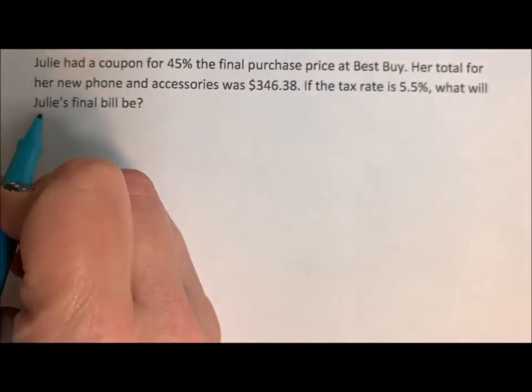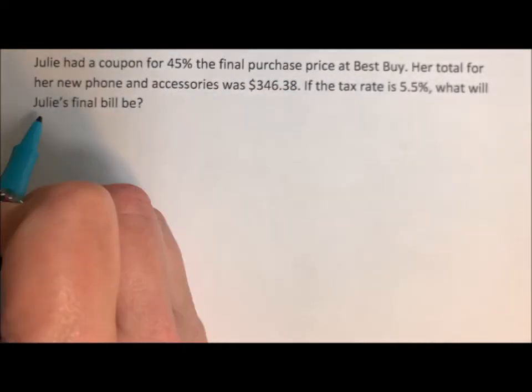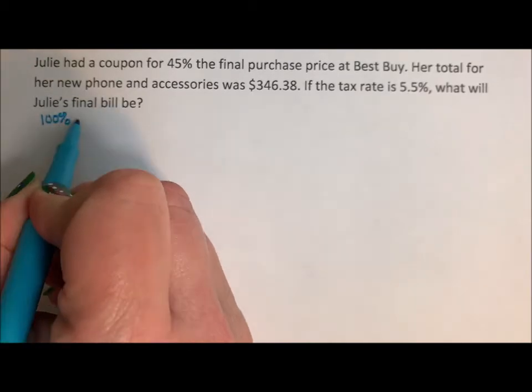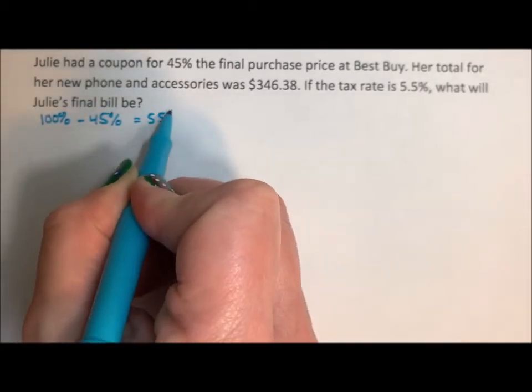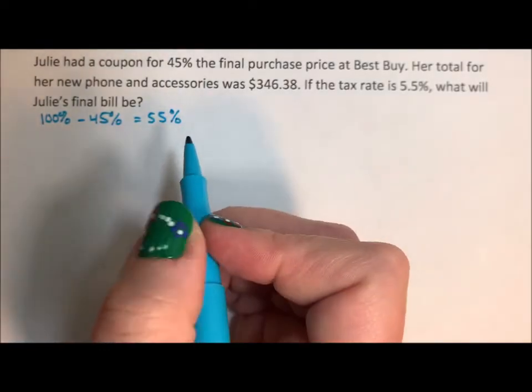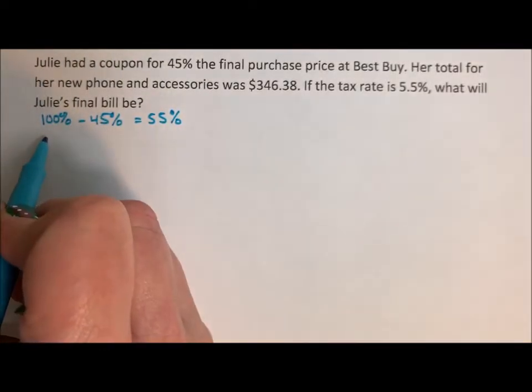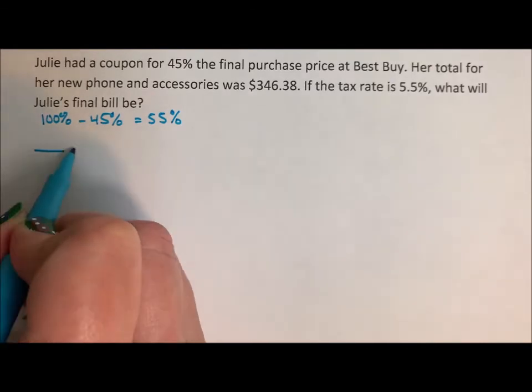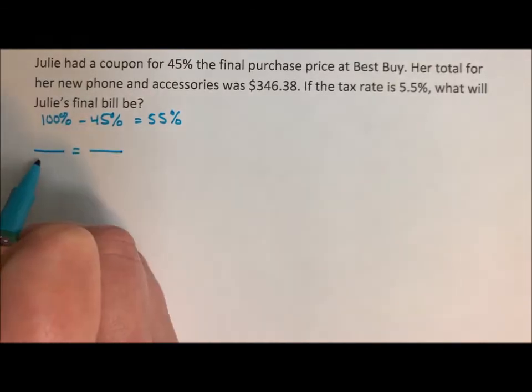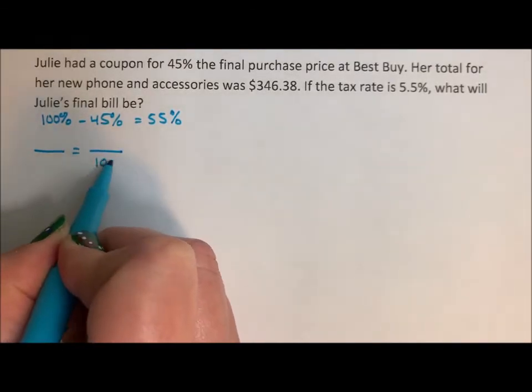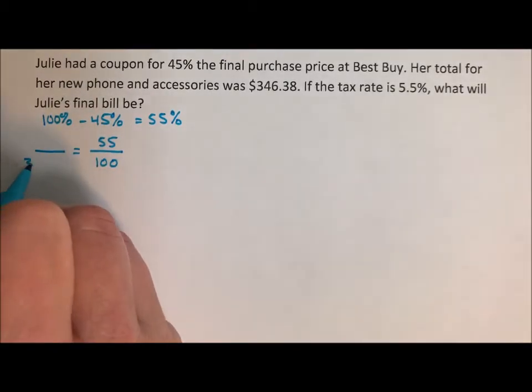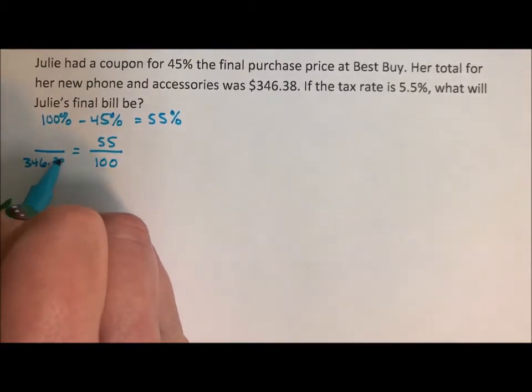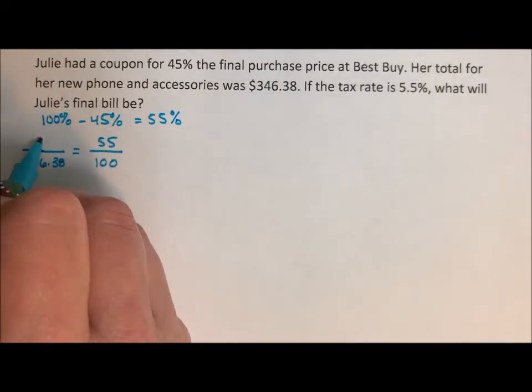So first of all, if she has a coupon for 45% off, 100% minus 45% means she's actually paying 55%. So if we use a proportion with percents, 100% of the bill is $346.38 and we want to know what 55% is.